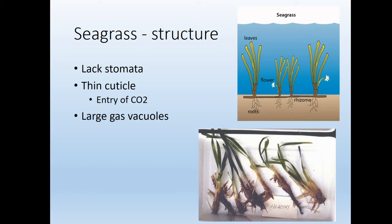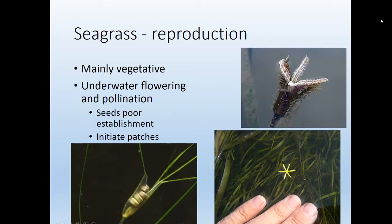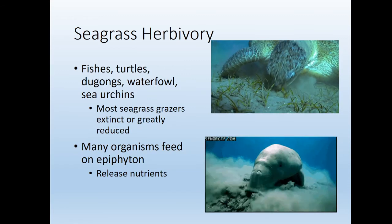Seagrass don't have stomata — having those holes underwater would just let water in. Instead, they have a really thin cuticle allowing CO2 to diffuse across, and large gas vacuoles that keep their leaves afloat in the water column. Reproduction is mainly vegetative, with roots growing out underground and new shoots popping up. They do have some underwater flowering, but pollination is really bad and seeds don't germinate well. Seeds are the only way new patches can get established, while most reproduction involves the seagrass lawn growing outward from a central patch.